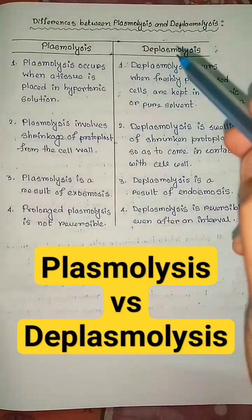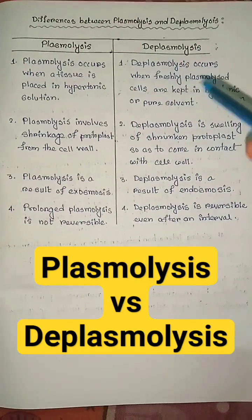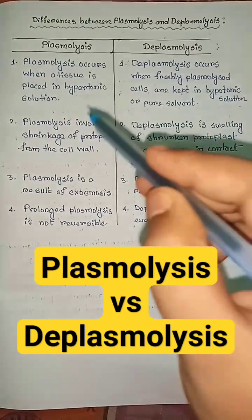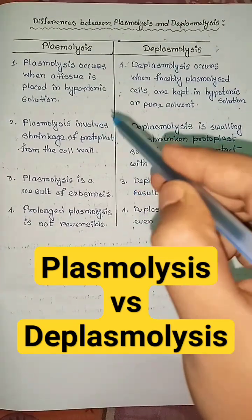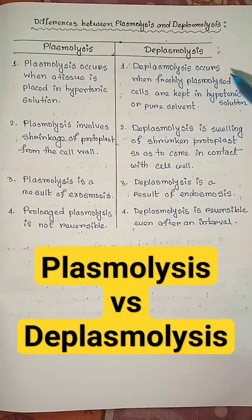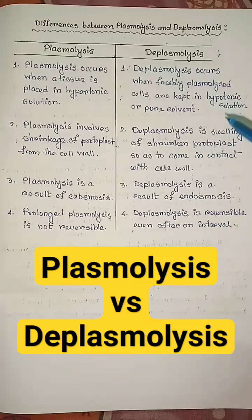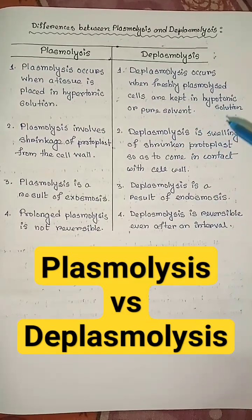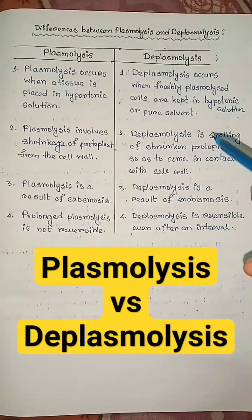Plasmolysis occurs when a tissue is placed in hypertonic solution, but deplasmolysis occurs when freshly plasmolyzed cells are kept in hypotonic solution or pure solvent.